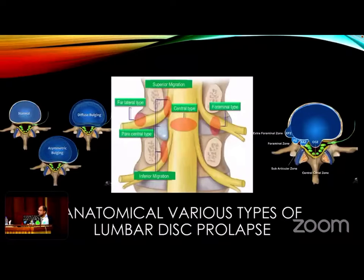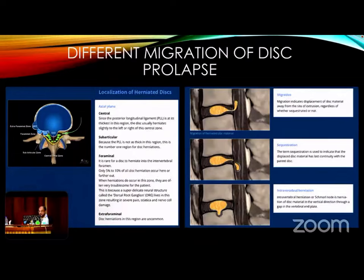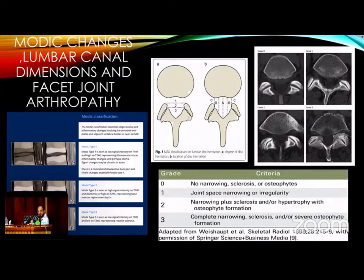I think all of us as spine surgeons know these images well, which represent the different types of lumbar disc prolapse, different types of disc migration in multiple directions, Modic changes, lumbar canal dimensions, and the facet joint arthropathy. I will not go through details because these are the cornerstones in taking the best decision for our patients, plus consideration of biomechanics.